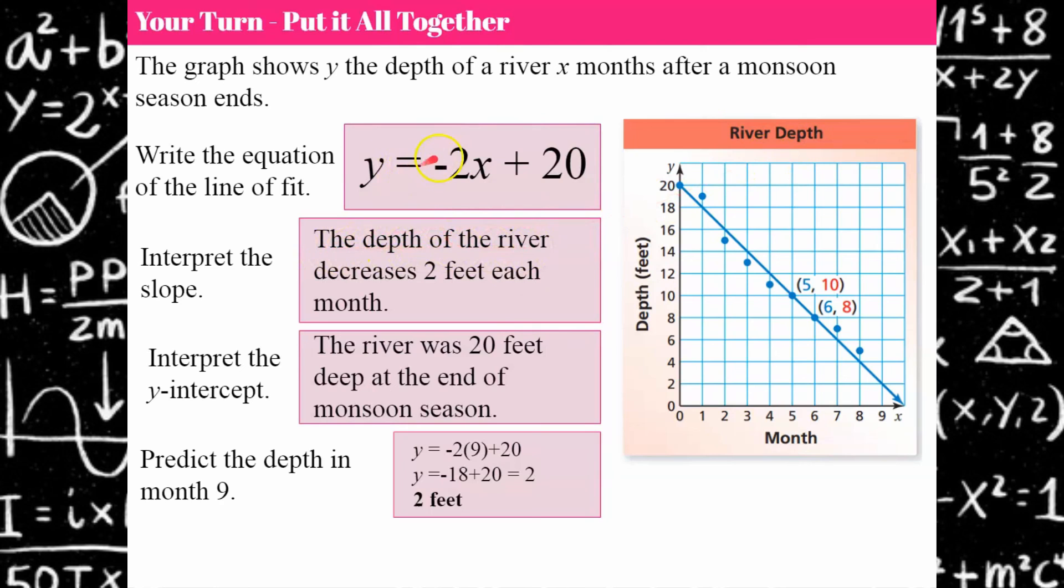The depth of the river decreases 2 feet each month. So that's just understanding that it's a ratio of the y over the x.